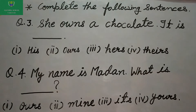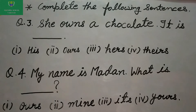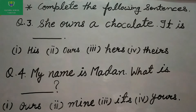Question 3: She owns a chocolate. It is ___. Options are: his, ours, hers, theirs. Question 4: My name is Madan. What is ___? Options are: ours, mine, its, yours.